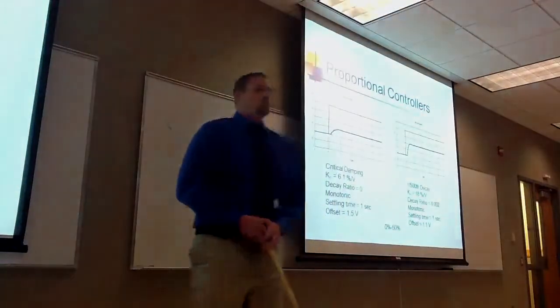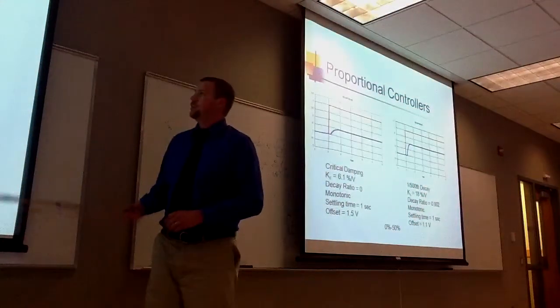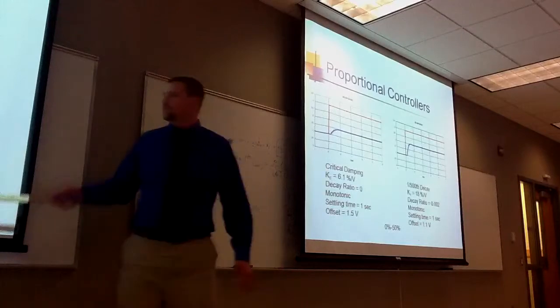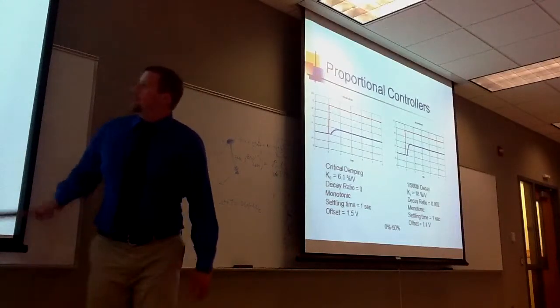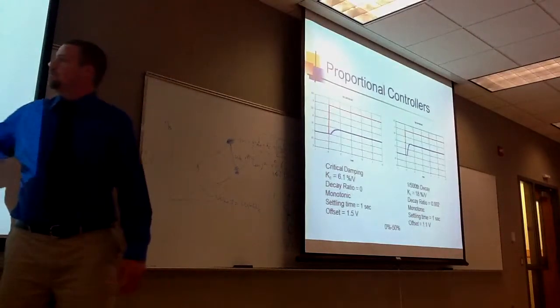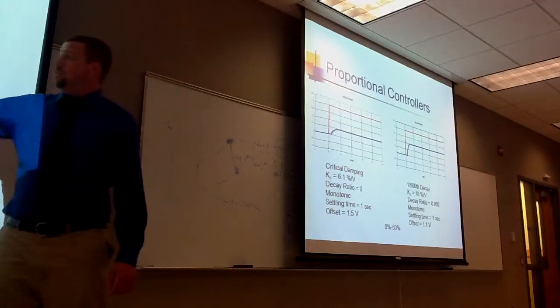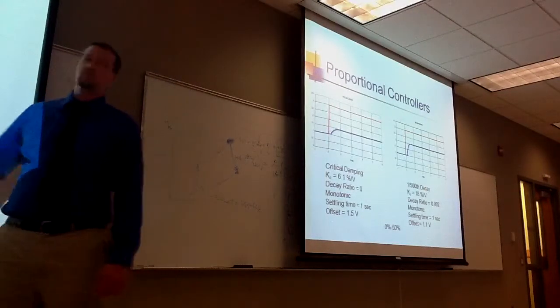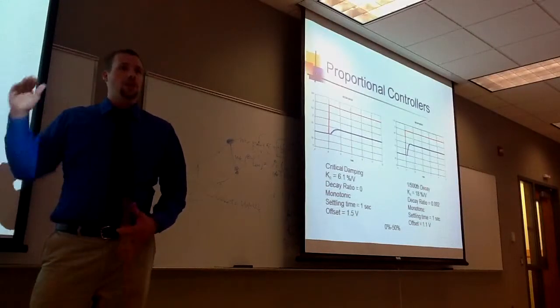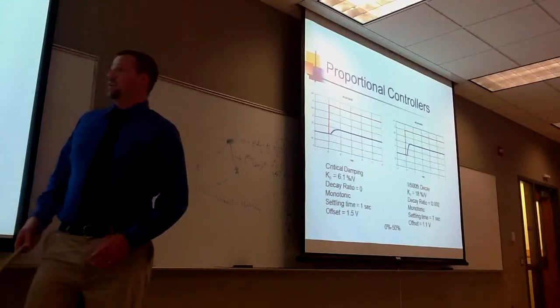Moving on to the proportional controllers. These are taken from my region, from the 0% to 50% input. First, we have the critically damped, which is, you can tell that it's critically damped because there's no oscillation at all. It goes up and stays steady from there on.